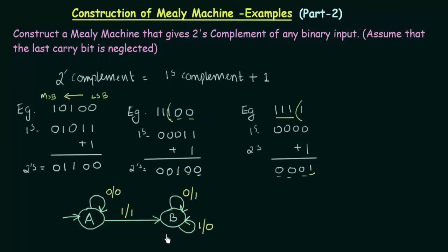Now we have completed the Mealy machine which gives the 2's complement. Whenever we get the first 0's counting from the LSB, we leave them as 0's, the first 1 is also left as 1, and after that whatever you get is complemented. Let us take a few examples and see if this is working.